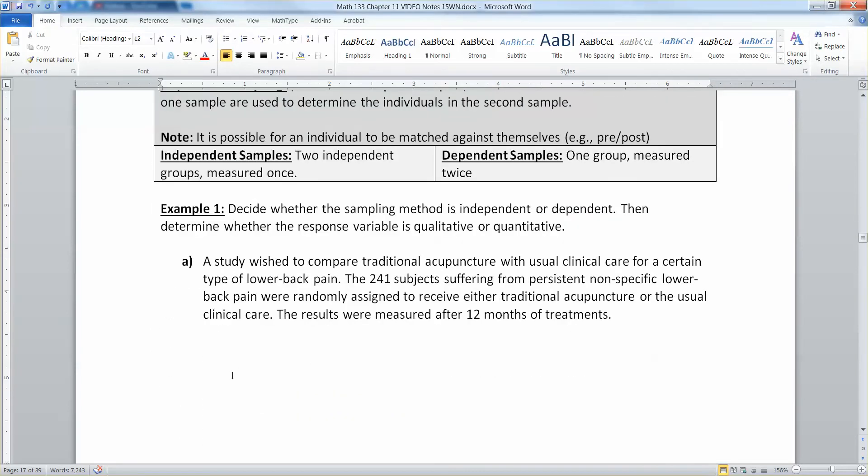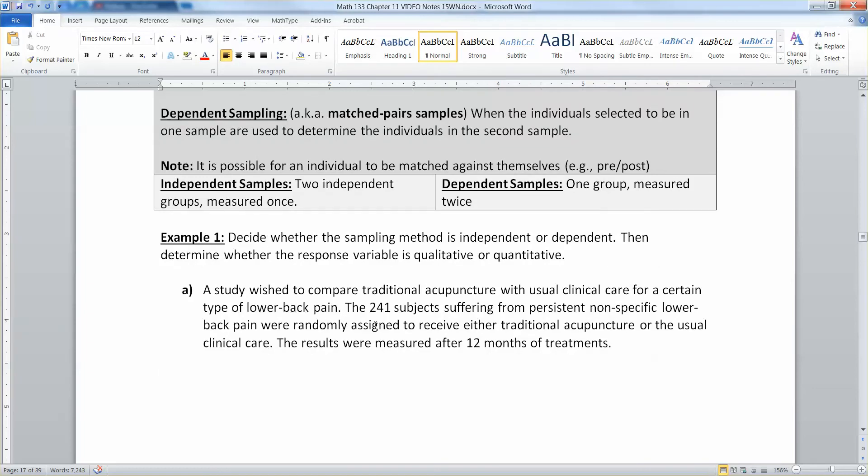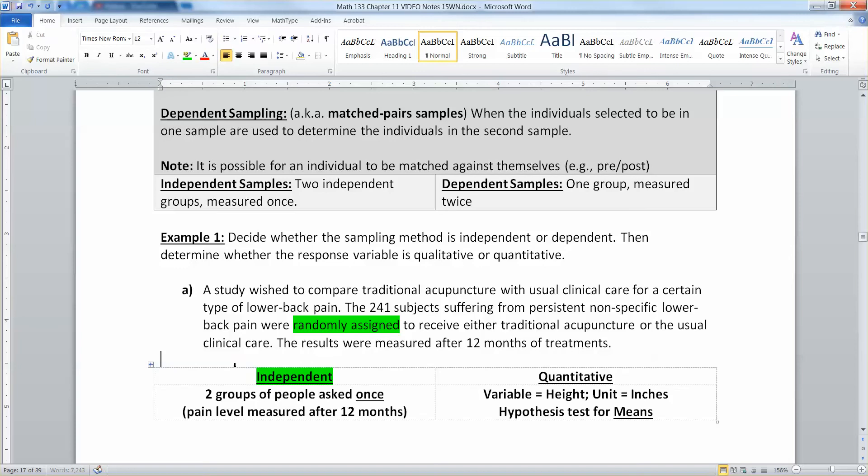We're going to determine whether the sampling method is independent or dependent, then determine whether the response variable is quantitative or qualitative. A study wished to compare traditional acupuncture with usual clinical care for a certain type of lower back pain. The 241 subjects suffering from persistent, nonspecific lower back pain were randomly assigned to receive either traditional acupuncture or the usual clinical care, and the results were measured after 12 months.